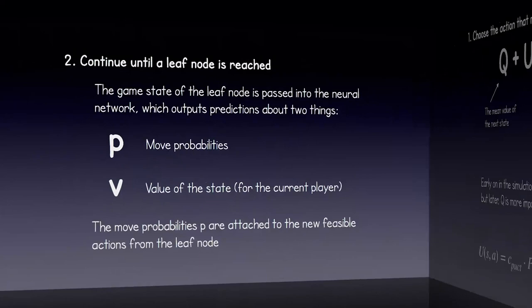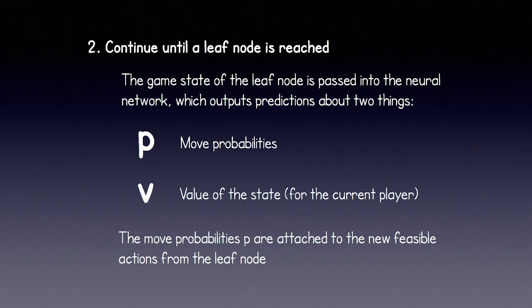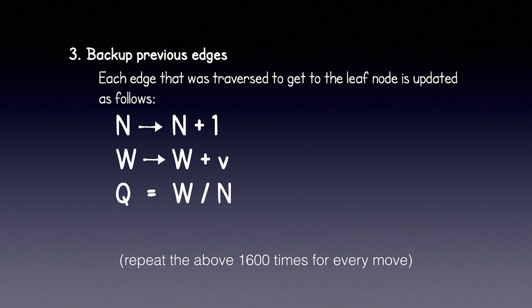Step 2: continue until a leaf node is reached. The game state of the leaf node is passed into the neural network, which predicts two things: P, a probability distribution for the likelihood of taking each possible move, and V, the value of the state for the current player. The probabilities for each possible action are attached to new edges branching from the leaf node. Step 3: back up previous edges all the way back to the root node. Each edge traversed is updated as follows — we increment N, add the value of the leaf node's state to W, and Q becomes the total of all values found divided by the number of times we visited the state, in other words the average value of the state.